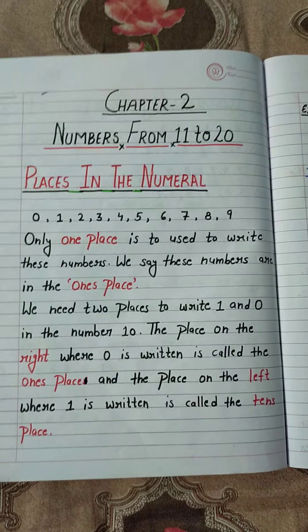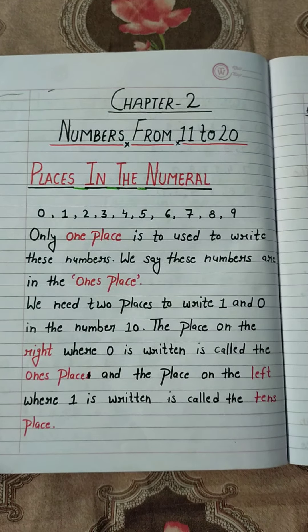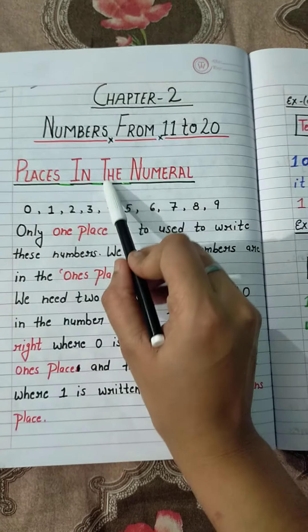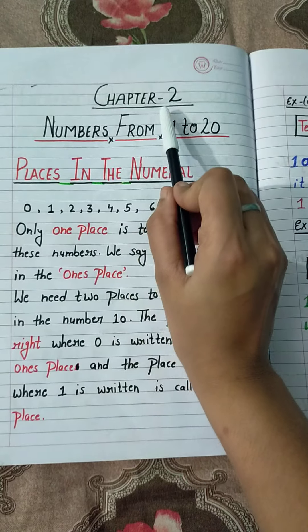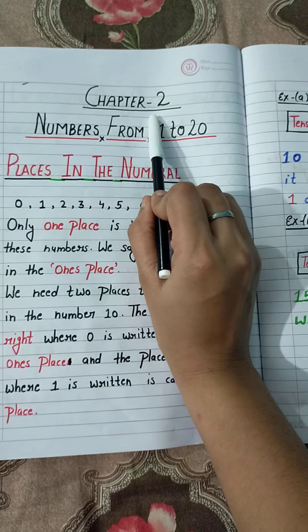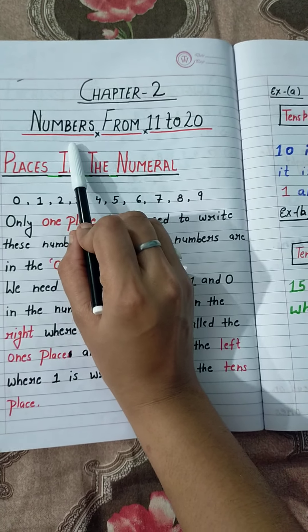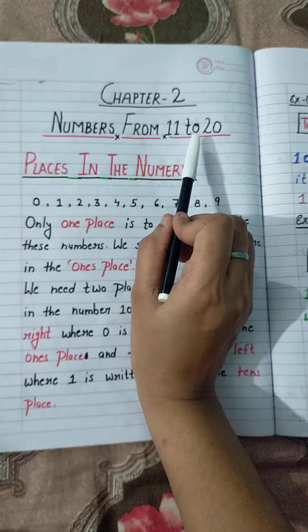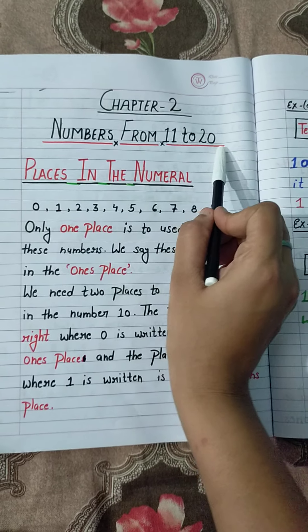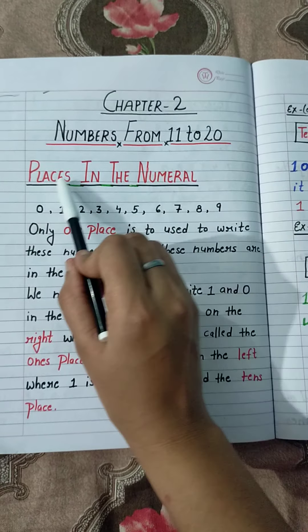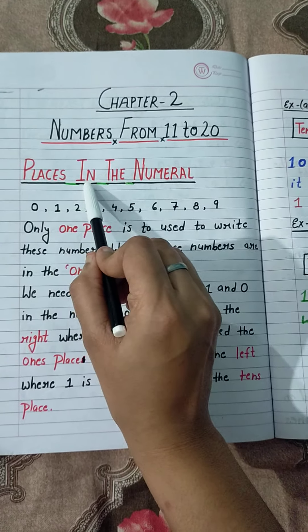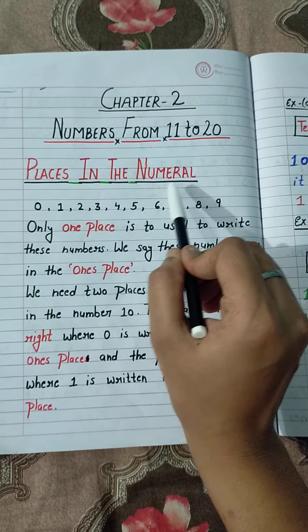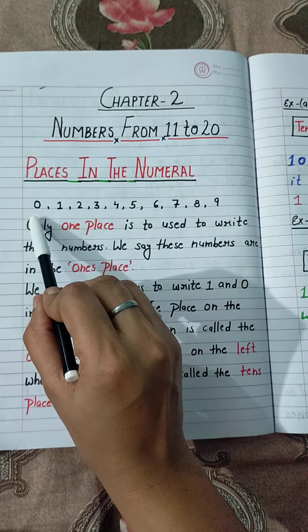Dear students, today we will learn the next topic of chapter 2. The chapter name is 'Numbers from 11 to 20' and the topic name is 'Places in the Numeral'.